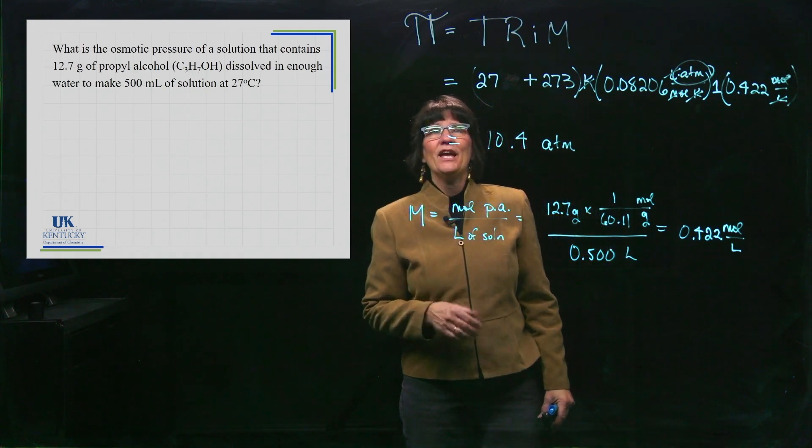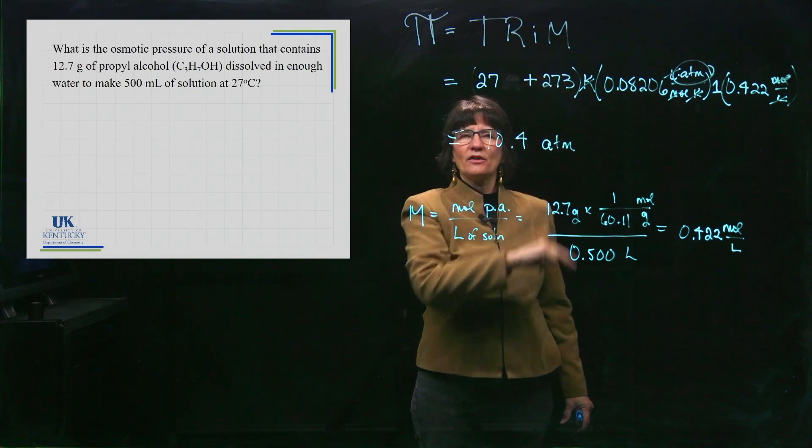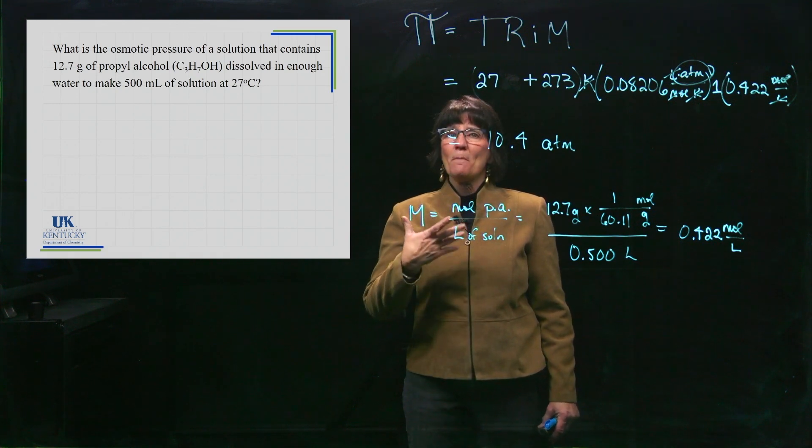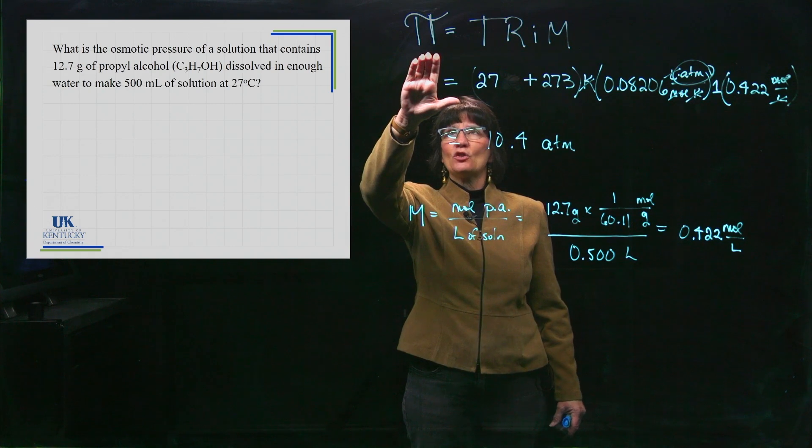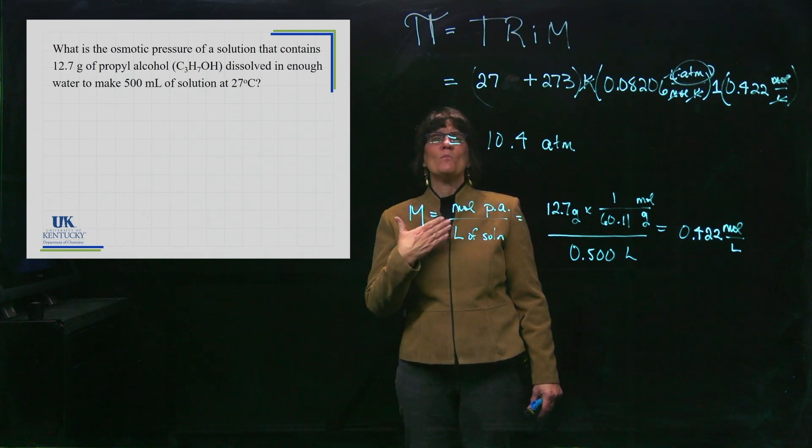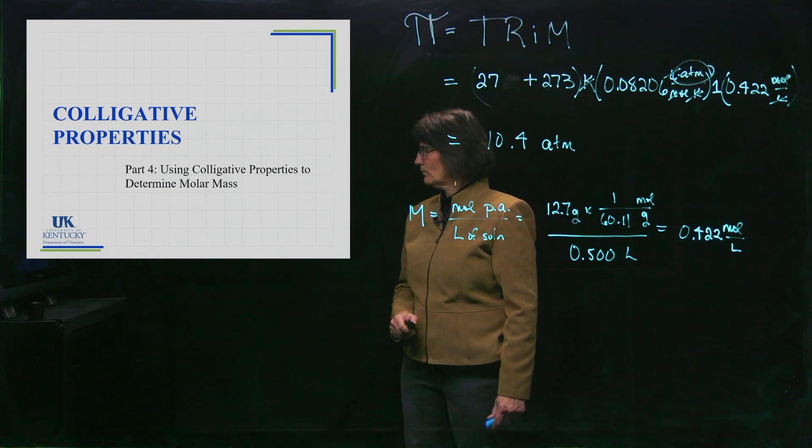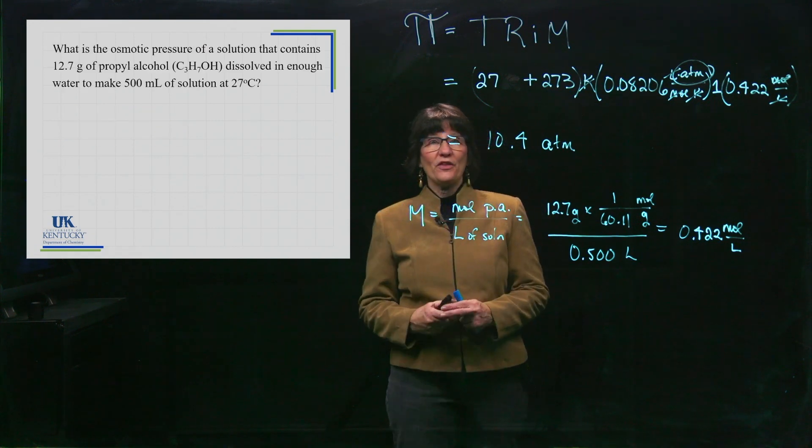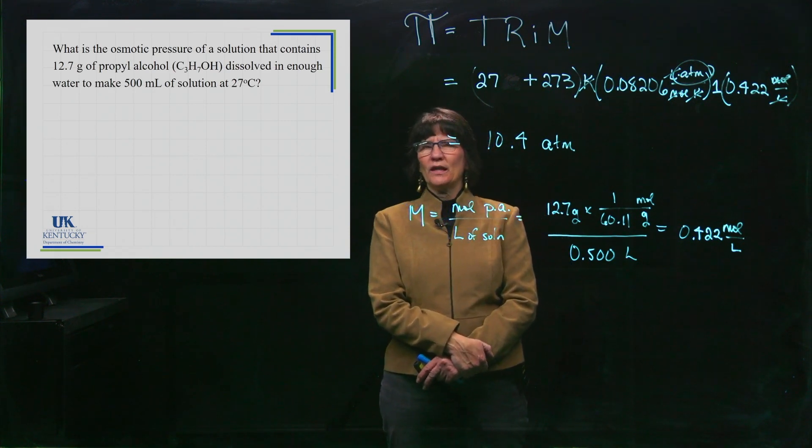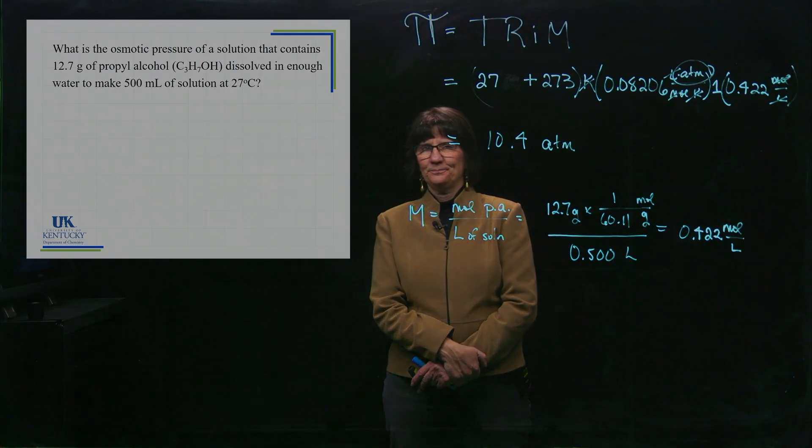Now more commonly you go and measure the osmotic pressure and from that measurement you can figure out the concentration. So if you have an unknown solution and you don't know the concentration and you're trying to do a measurement of its concentration, you can measure the osmotic pressure and obtain a value for the molarity. So that would be more commonly what is done there. So we're going to stop here with this lesson and then we're going to have one more lesson about colligative properties and that is how we can use colligative properties to determine the molar mass of an unknown.